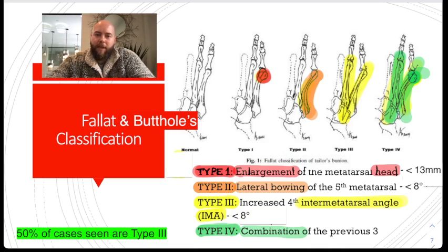This is the Fallat and Buckholz classification of Taylor's bunionette. You remember that because Fallat sounds very similar to phallic, and Buckholz honestly sounds like butthole, let's be honest.